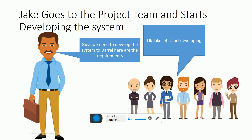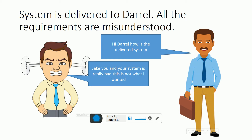The development team — comprising project managers, developers, QAs, and support engineers — starts developing the system. However, each person interprets the requirements in their own way. There is no uniformity. Upon completion, the system is delivered to Darrell, and it is not what he expected.